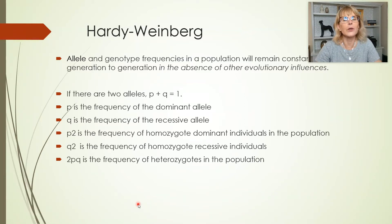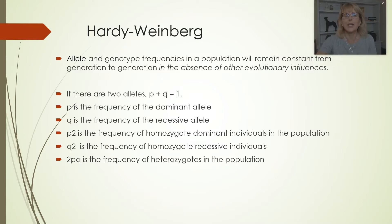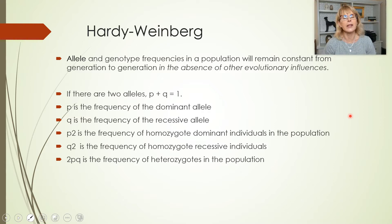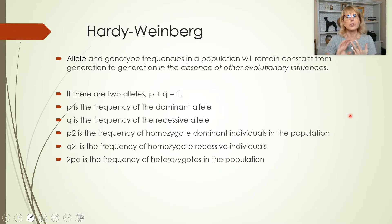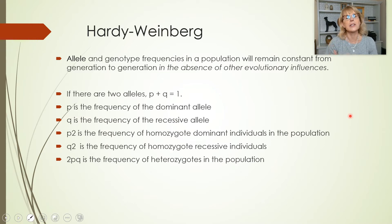Let's talk about the Hardy-Weinberg formula, the Hardy-Weinberg equation, and Hardy-Weinberg equilibrium. Hardy and Weinberg figured out that in populations of individuals that had two alleles at any given gene, and if those populations were not evolving, there would be a steady state distribution of dominant and recessive alleles in the population.